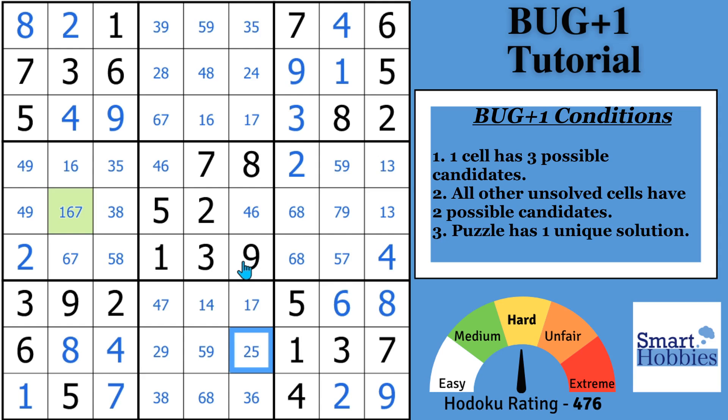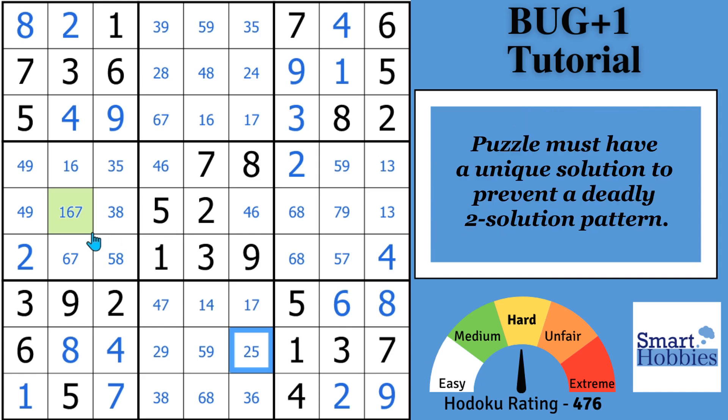Okay, so at this point, you can apply the Bug Plus One technique. You can solve all the remaining cells with one technique, and it's so much fun. But before I do that, I need to make two very important points. First, why does the puzzle have a unique solution? Well, if this puzzle did not have a unique solution, let's say this only had two candidates there, we'll remove the six. And if this cell only had two candidates...